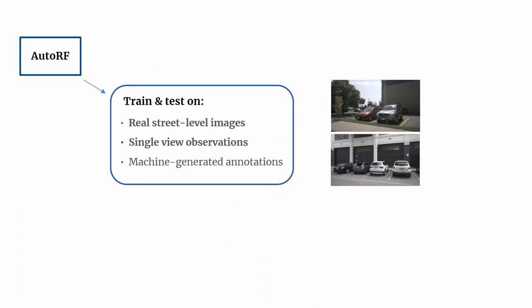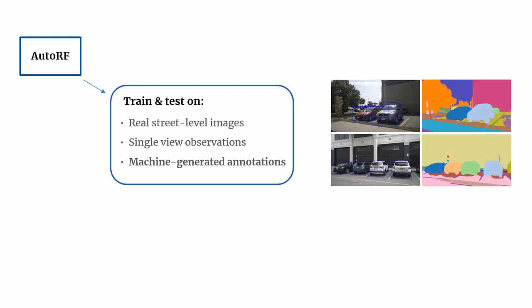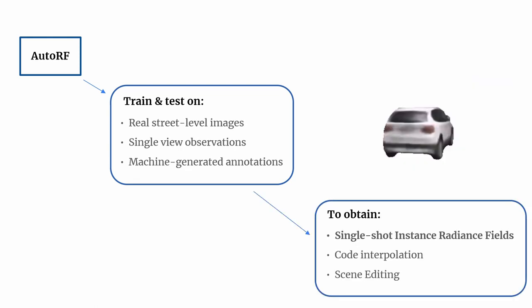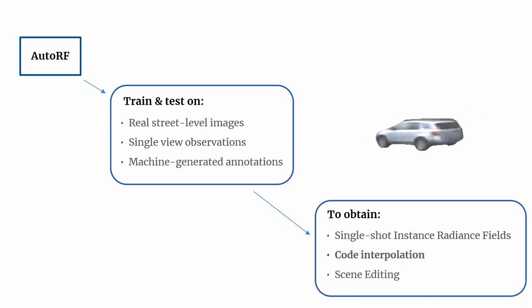AutoRF is trained on single-view, real street-level images using machine-generated annotations. It generates single-shot neural instance radiance fields that can be refined at test time. AutoRF can synthesize full scene compositions, interpolate object properties, and enable scene editing.